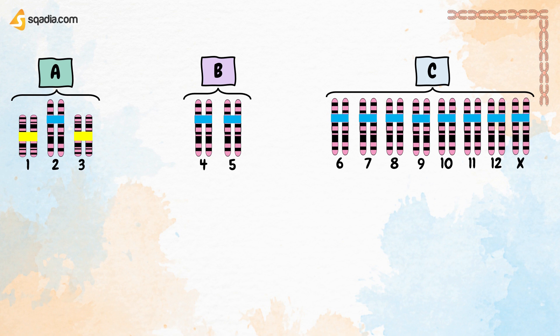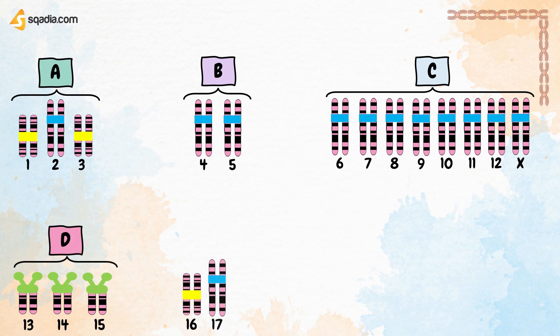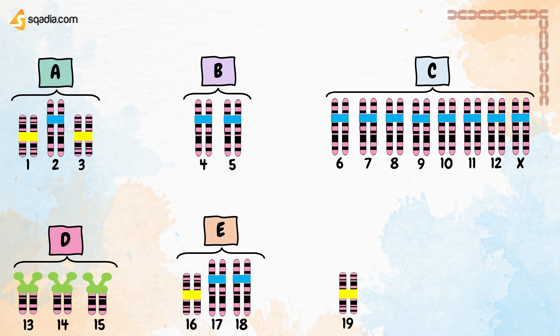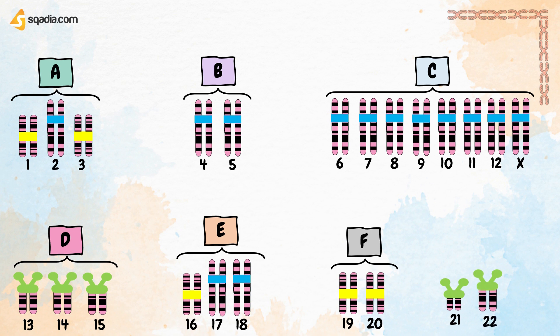Chromosomes 13, 14, and 15 are in group D. Chromosomes 16, 17, and 18 are in group E. Chromosomes 19 and 20 are in group F. Chromosomes 21 and 22 are in group G. Group G also includes chromosome Y.